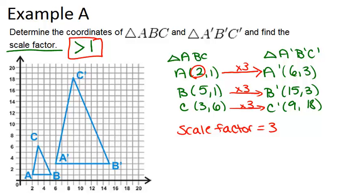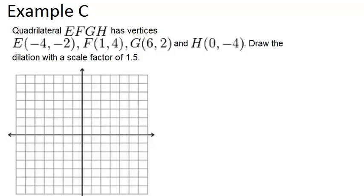All right, let's go to example C. In example C, it says quadrilateral EFGH has vertices E(-4,-2), F(1,4), G(6,2) and H(0,-4). Draw the dilation with a scale factor of 1.5.